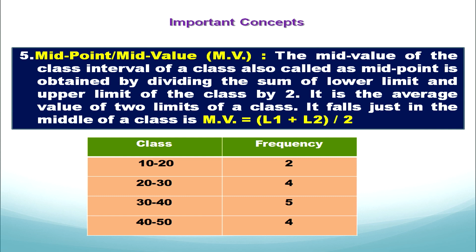How do we get the midpoint or midvalue? We simply add up the lower limit and the upper limit, then divide this sum by 2 because we have 2 limits, and we get the midvalue.